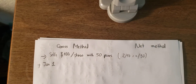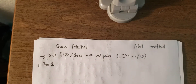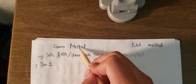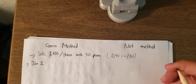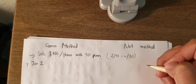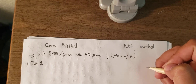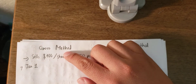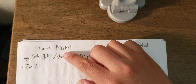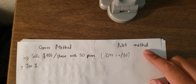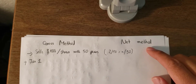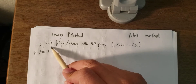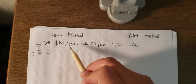Hello everybody. Today I want to distinguish between the GROSS method and the NET method. This will be on the test. The GROSS method is used for sale accounts receivable for discounts. In the GROSS method, the discount is not included, but in the NET method, the discount will be included for the sale.